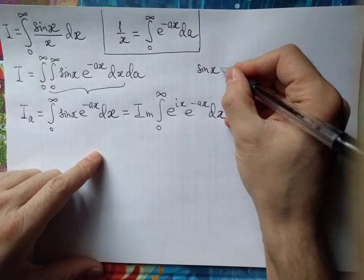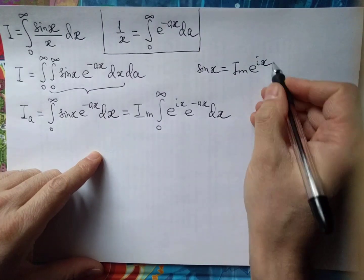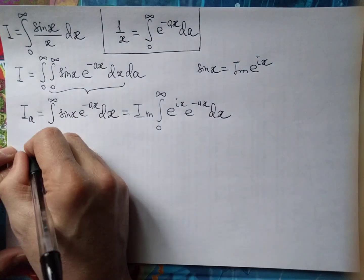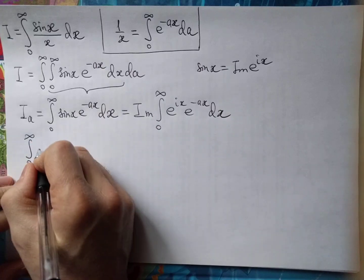Sine of x is the imaginary part of this exponential. Okay, this integral is rather easy to calculate.